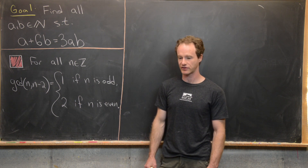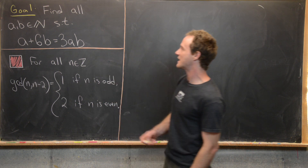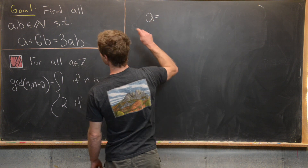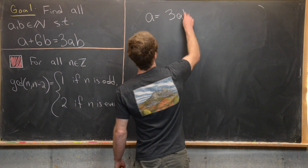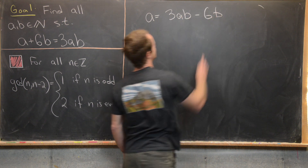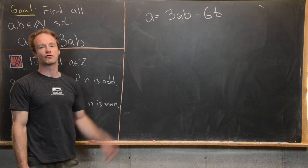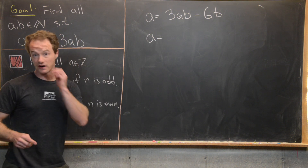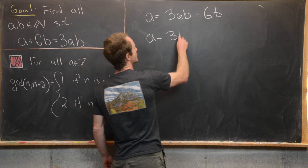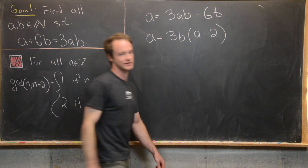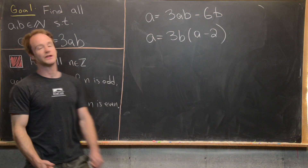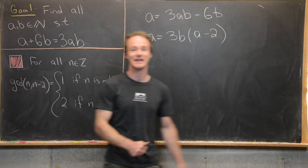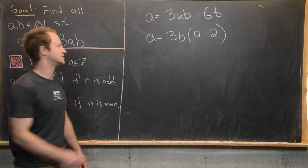We want to solve A plus 6B equals 3AB. The first thing we'll do is rewrite this so that all the Bs are on one side: A equals 3AB minus 6B. Now we can take out the greatest common factor of 3B from the right-hand side, giving us A equals 3B times (A minus 2). Now we want to use our tool, and since our tool has two cases — n is odd and n is even — we're going to break this into two cases.